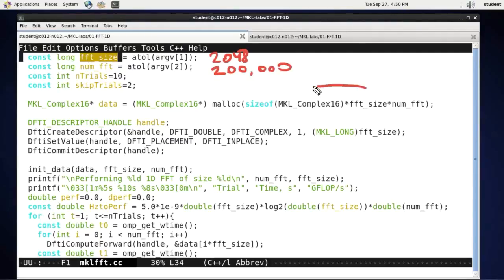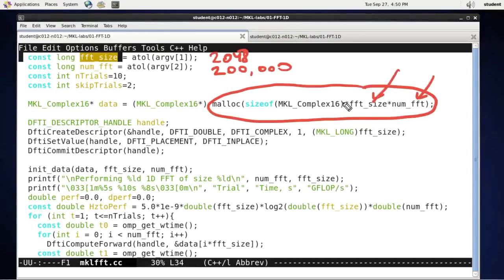And it allocates a large array to keep this many transforms of that size. The data type is MKL_Complex16, which is double precision complex numbers.